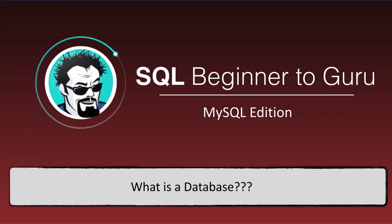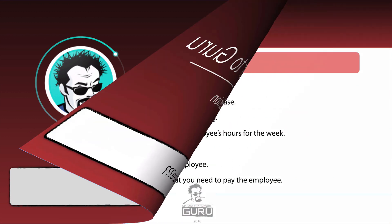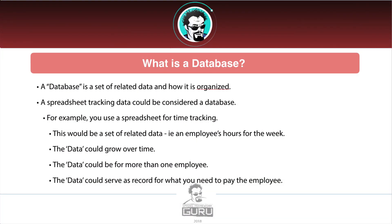In this lecture we are going to be looking at exactly what is a database. I want to get some common terminology down and talk about what a database actually is. Technically we can look at a database as a set of related data and how it is organized. It's not just a bunch of bits and bytes and meaningless information — it's data that has a common purpose. An example of this could be a spreadsheet just tracking data. That could be considered a database.